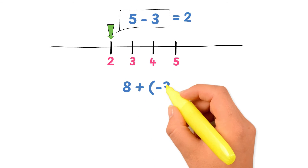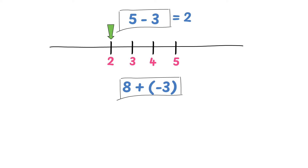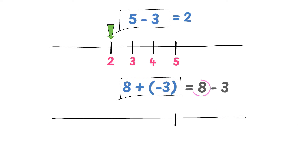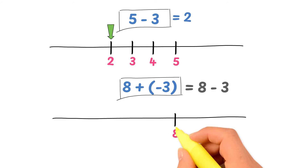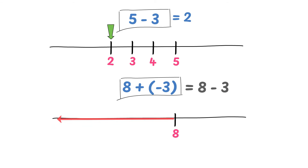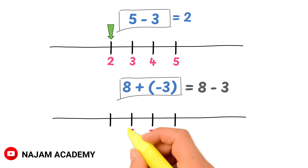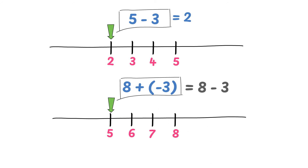Now what is 8 plus negative 3? We know that 8 plus negative 3 is equal to 8 minus 3, because positive times negative is equal to negative. Draw the number line and write the first integer which is positive 8. The second integer is negative 3, so we have to travel 3 spaces to the left: 1, 2, and 3. This is 7, 6, and 5. So 8 plus negative 3 is equal to 5.